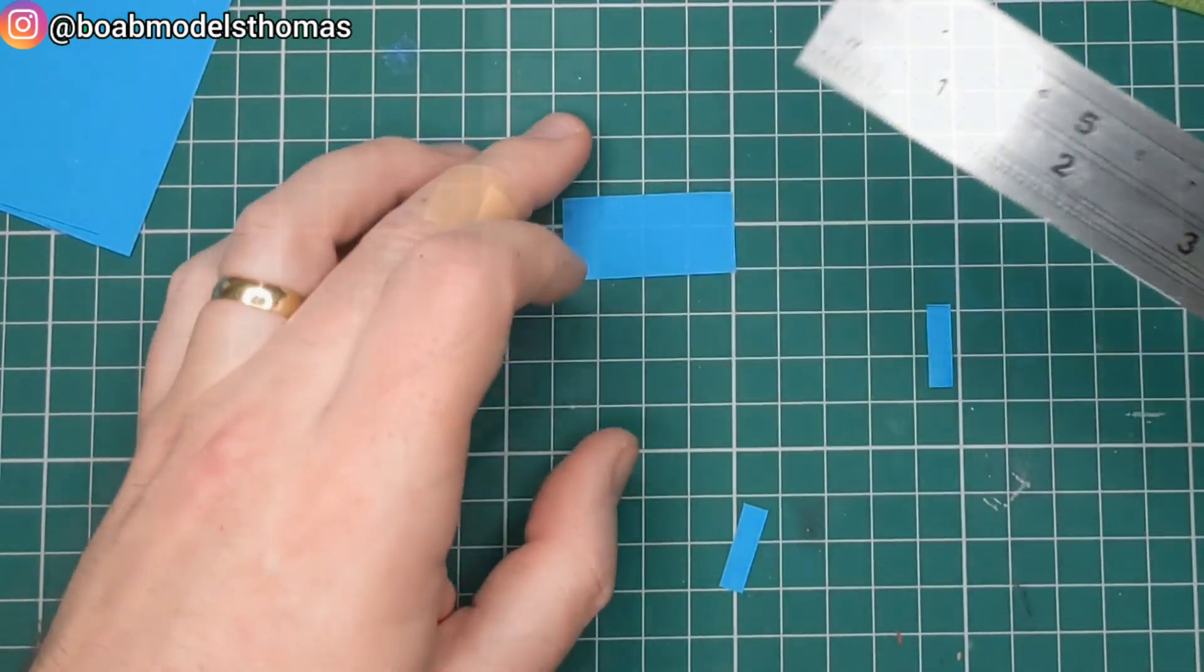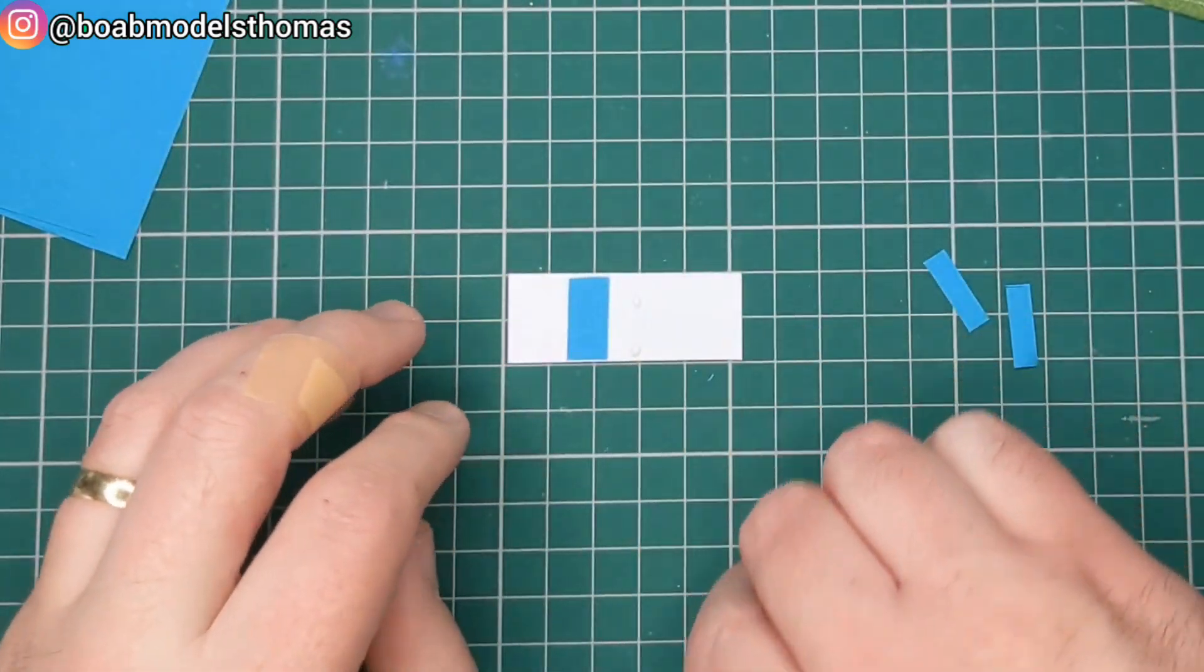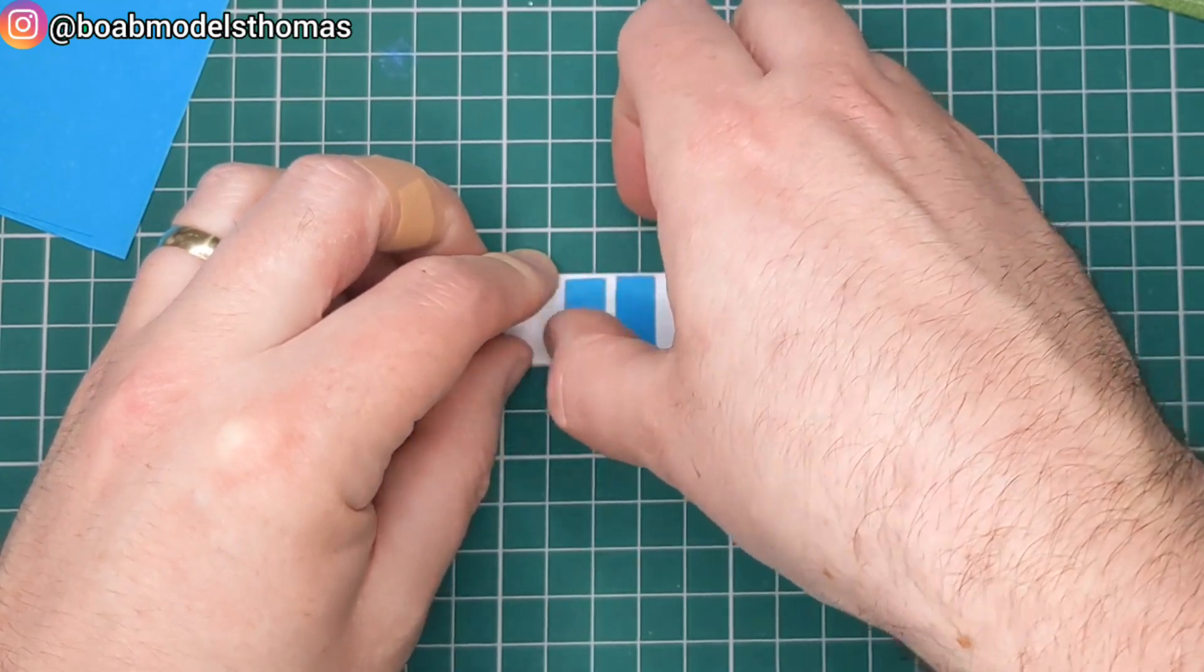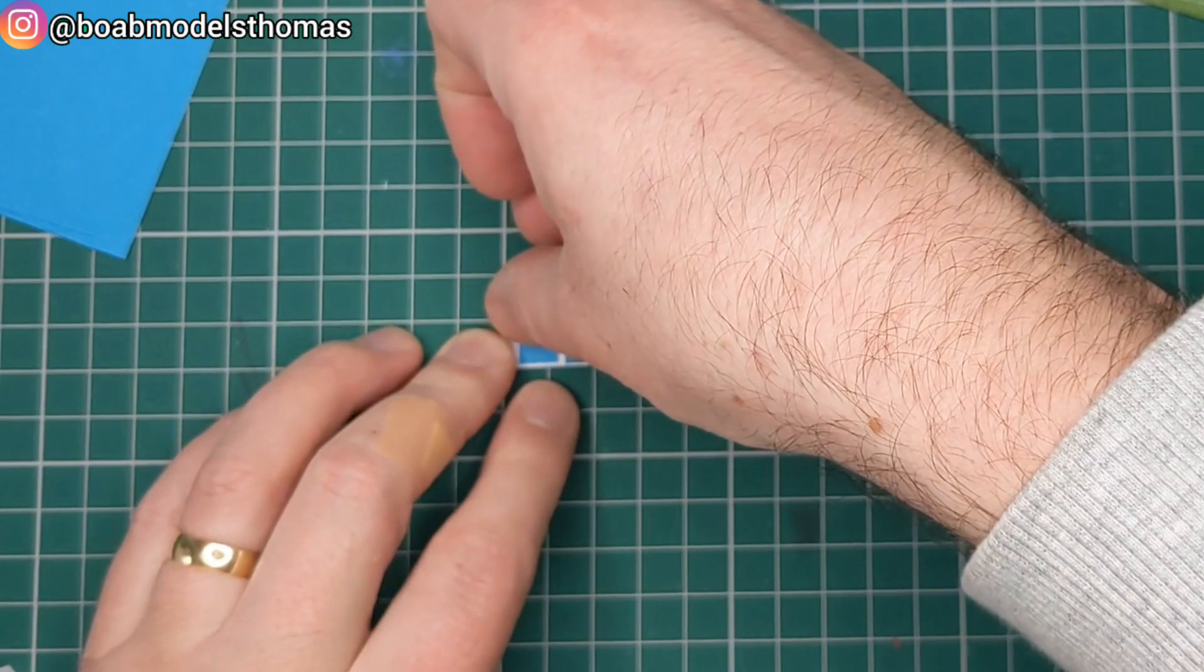Now, for the seats, I chose to use some thin blue card. You could paint these sections or you could print these off, but I thought that this was useful because I could divide them into sections and then also do the little walkways.